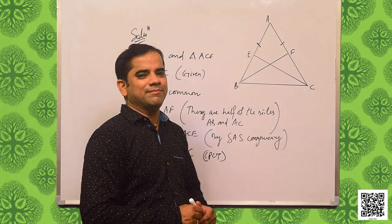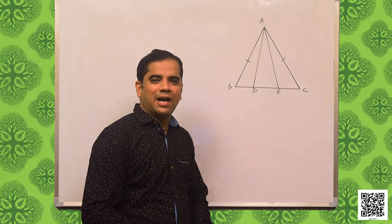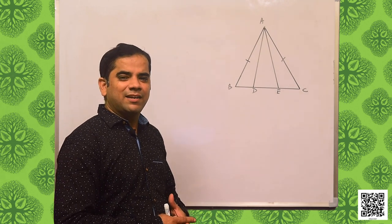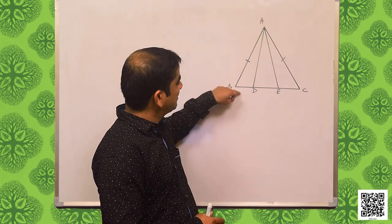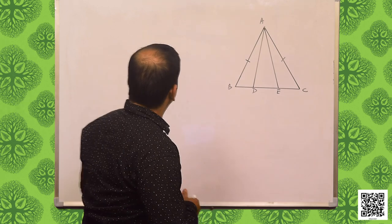Let us discuss example 6. It says: in an isosceles triangle ABC with AB equal to AC, D and E are points on BC such that BE is equal to CD — show that AD is equal to AE. I have constructed the diagram as given in your book. ABC is a triangle with AB equal to AC, D and E are points on BC such that BE is equal to CD, and we need to prove that AD is equal to AE. Let us go for the solution.